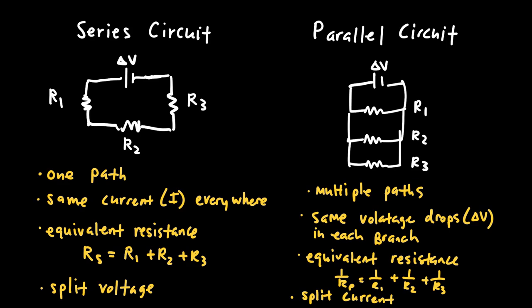To understand a circuit you need to understand the difference between series and parallel. In a series circuit there is only one path — the current comes out of the positive terminal of the battery and flows through that single path back through the battery. Because there's nowhere else for the charge to go, the current is the same everywhere along that path. At points A, B, C, and D the current is equal; there is a voltage drop across a resistor, but that does not change the current.